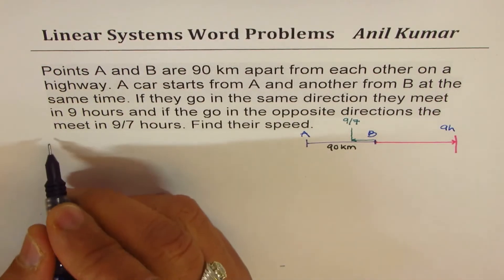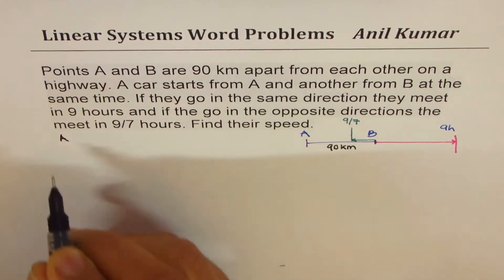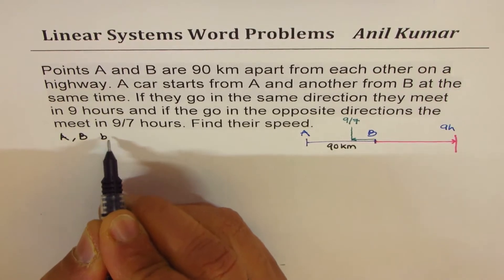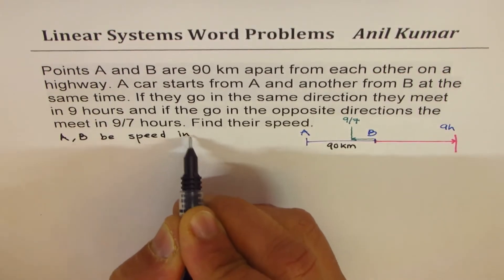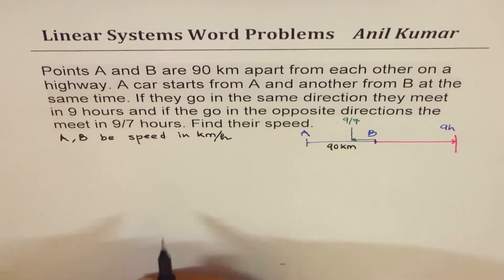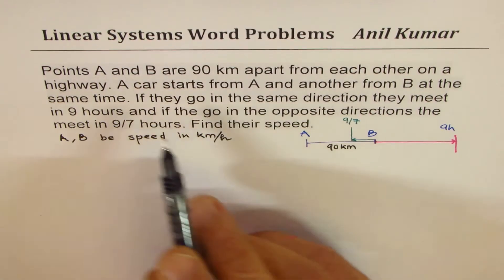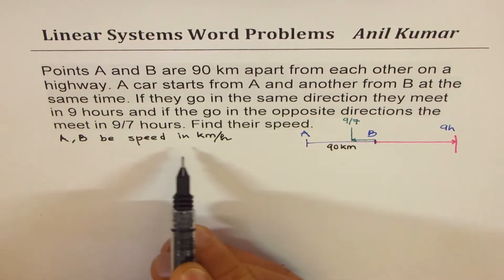Let's begin with our statement. So A and B be speed in kilometers per hour for each. So car A is moving at A kilometers per hour. B is moving at B kilometers per hour.